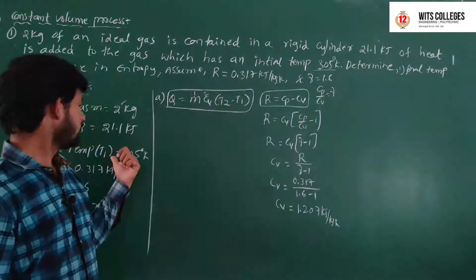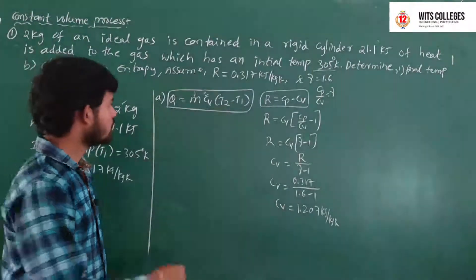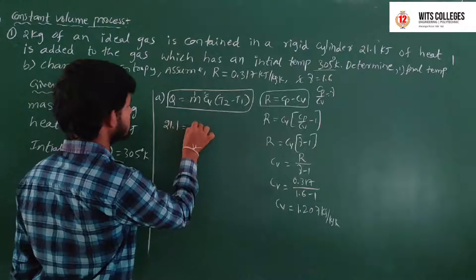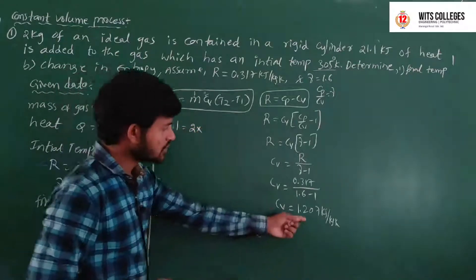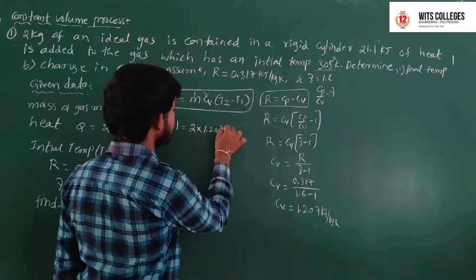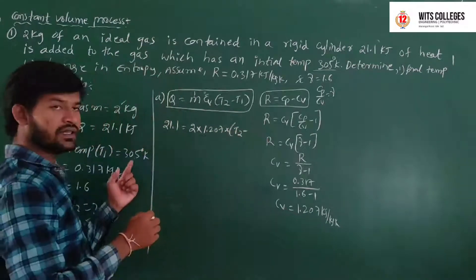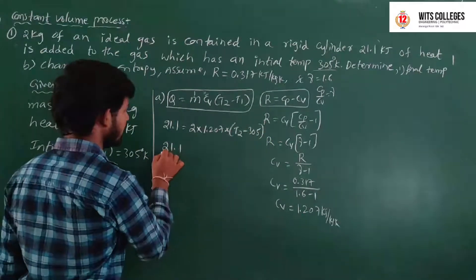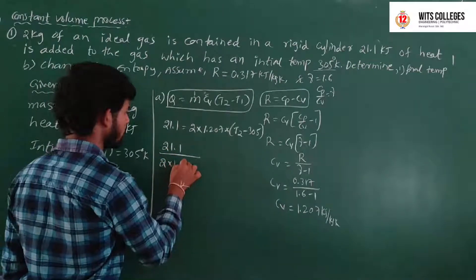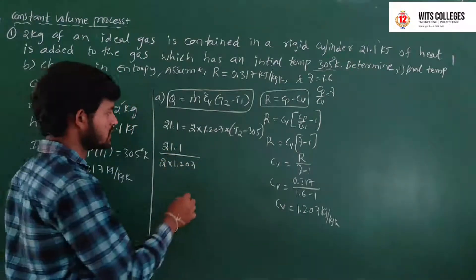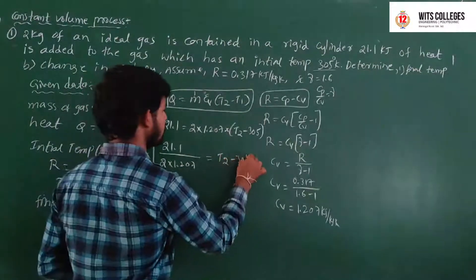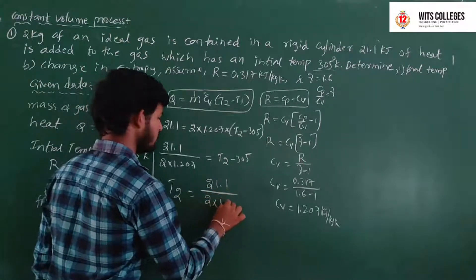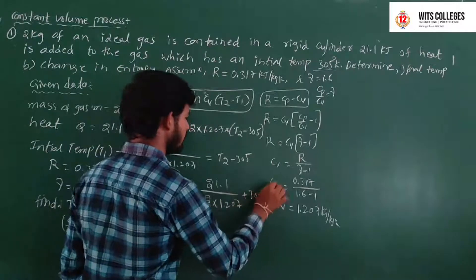T2 is unknown; T1 is given as 305 K. Substituting: Q = 21.1, M = 2, CV = 1.207, so 21.1 equals 2 into 1.207 into (T2 minus 305). Solving: T2 equals (21.1 divided by 2 into 1.207) plus 305, giving T2 equals 313.7 K.